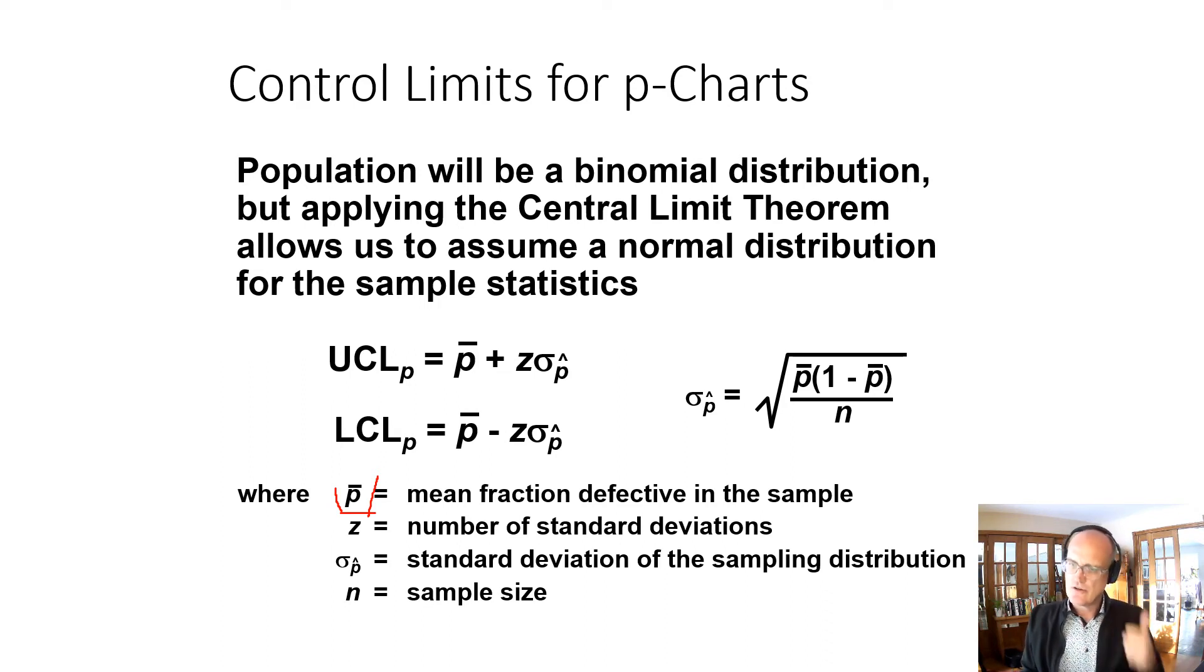Then we look at the average proportion defective, and that becomes p-bar. We have z, which is the number of standard deviations we're willing to accept. You're usually given that when you have to calculate these. Standard deviation of the proportion is the standard deviation of the sampling distribution, and N is the sample size. The places that students go wrong here are determining N, and I encourage you to look at my video on some examples. Once you've got that, this is relatively easy.